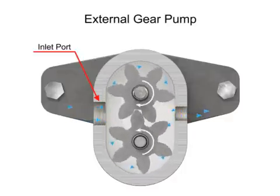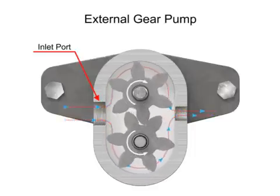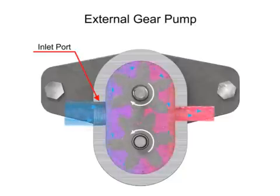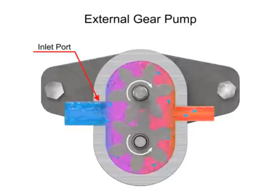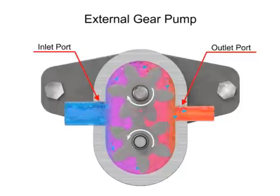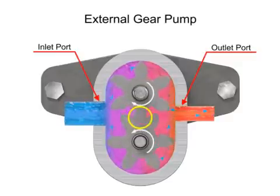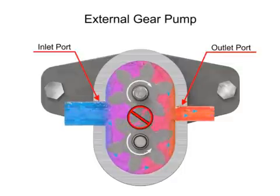As the gears rotate, a flow path is created around the outside of each one. Fluid trapped in the slots between teeth is carried around and discharged into the cavity with the outlet port. Meshing of the teeth in the center of the pump seals the outlet port from the inlet port. No fluid passes between the gears.